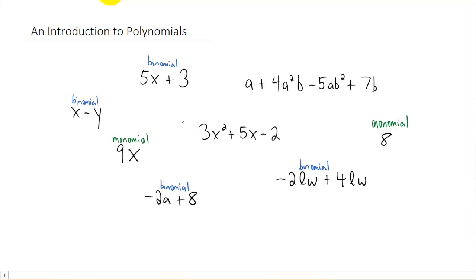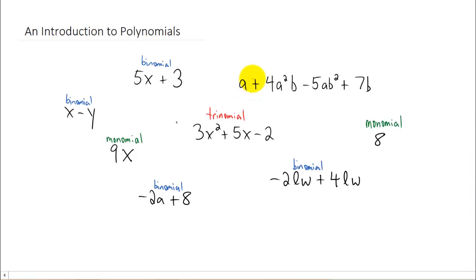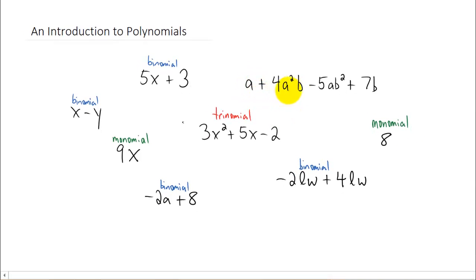You'll notice one polynomial here has three terms, right here. And it's called a trinomial. Tri meaning three, like a tricycle, three wheels. If a polynomial has more than three terms, I don't know that we give it a special name. It's just a polynomial with four terms. You can have polynomials that have five terms, six terms, all the way up to an infinite number of terms.